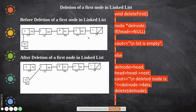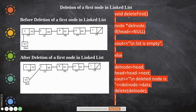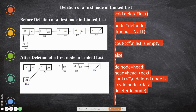Before deleting anything, there must be some check. If you want to delete something, you first have to check whether any node exists in the list at all. For that, we are assigning a temporary node — a variable called del_node which is of the type node. A node is a structure that consists of an information field and a next field, so del_node is also of the same type, and it will hold the node to be deleted.